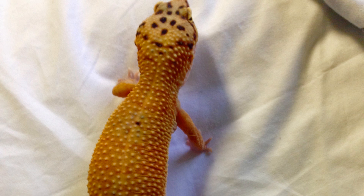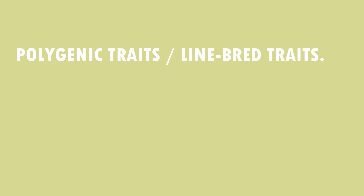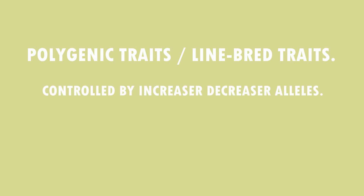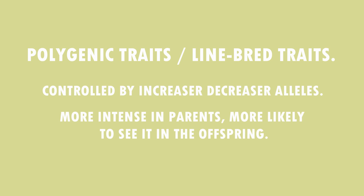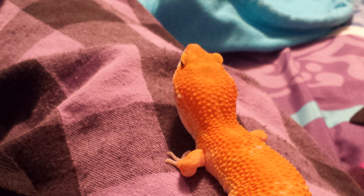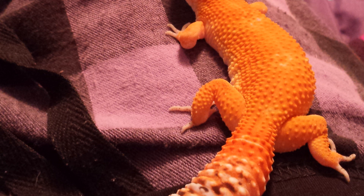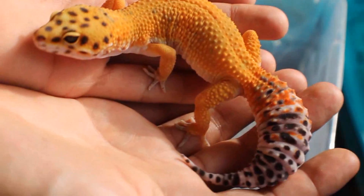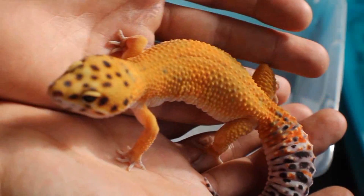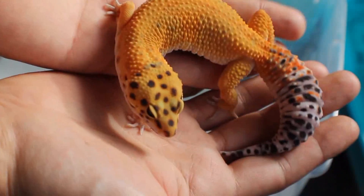You may be wondering what tangerines and bandits are classed as. These are actually known as polygenic traits or line-bred traits. Line-bred traits are controlled by increase or decrease alleles, so the more intense a trait is in the parent the more likely you'll see that trait in the offspring. If a line-bred gecko like a tangerine is bred to a normal morph, almost all the first generation babies will show tangerine. However, to establish that initial trait a lot of inbreeding occurs, and if you do not introduce new geckos into the genetic mix every three to five generations you'll end up with quite a lot of ill, infertile and majorly inbred geckos.